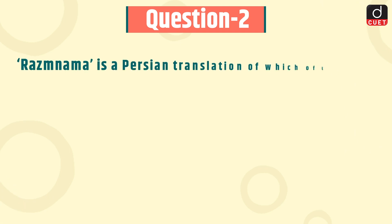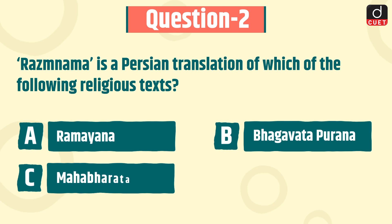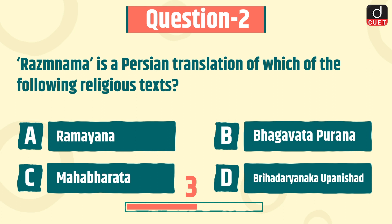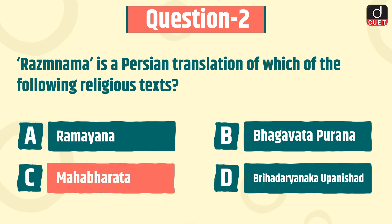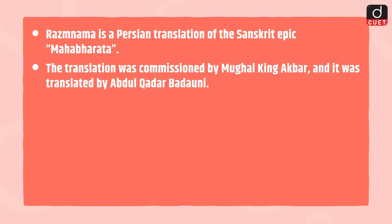The next question is: Razmanama is a Persian translation of which of the following religious texts? Ramayana, Bhagwat Purana, Mahabharata, or Brihadaranyaka Upanishad? The correct answer is option C, Mahabharata. Razmanama is a Persian translation of the Sanskrit epic Mahabharata. The translation was commissioned by Mughal King Akbar and was translated by Abdul Qadir Badauni.